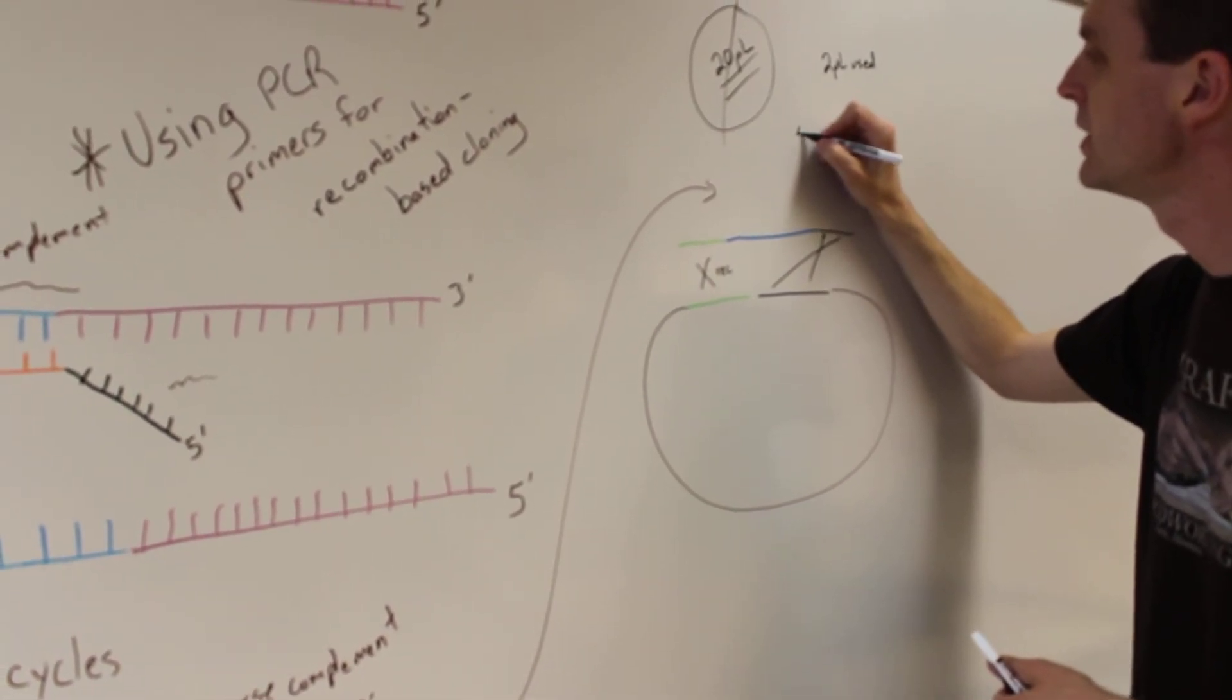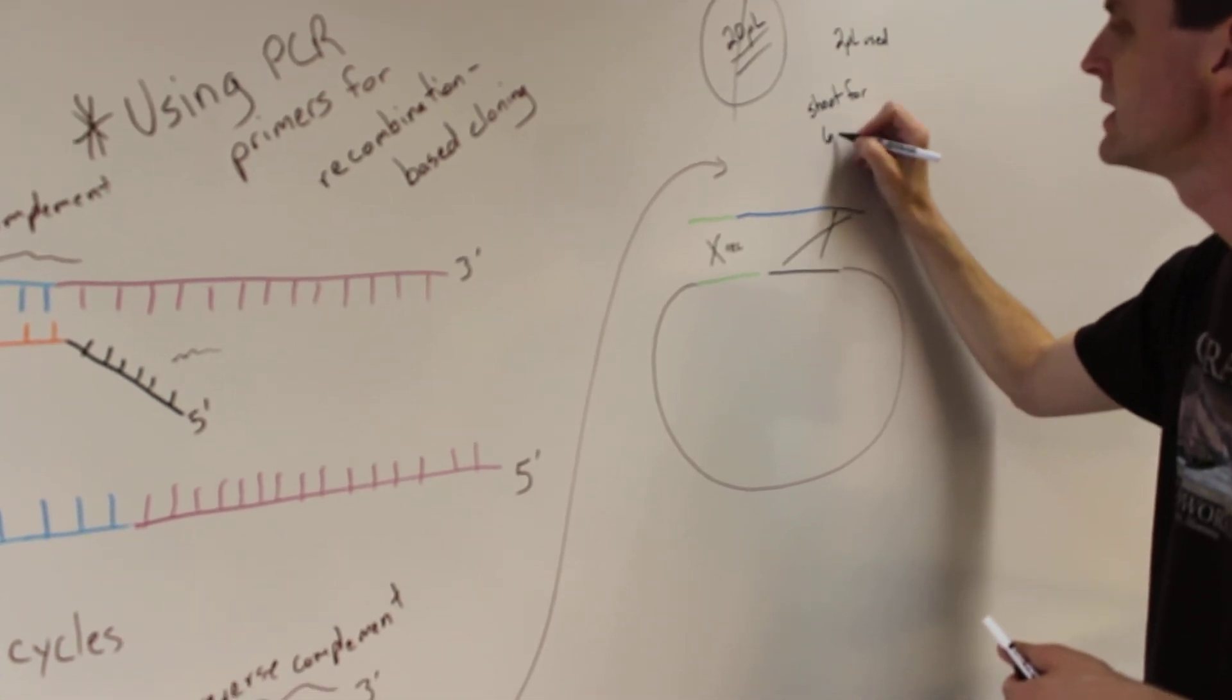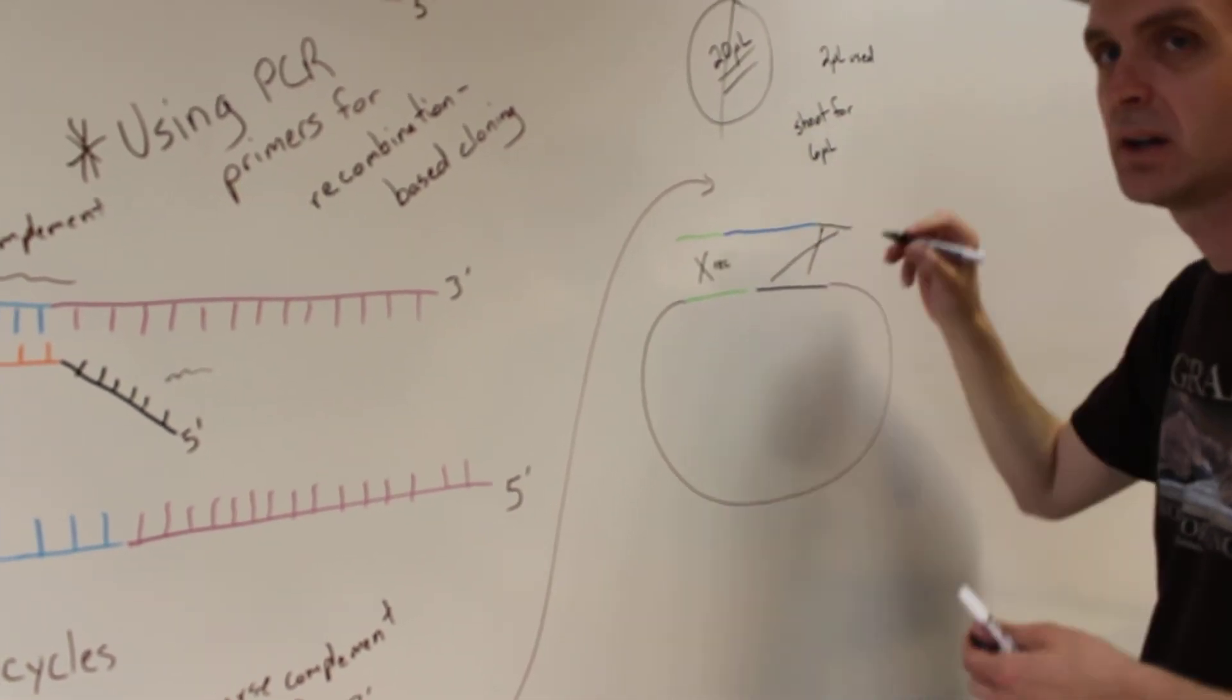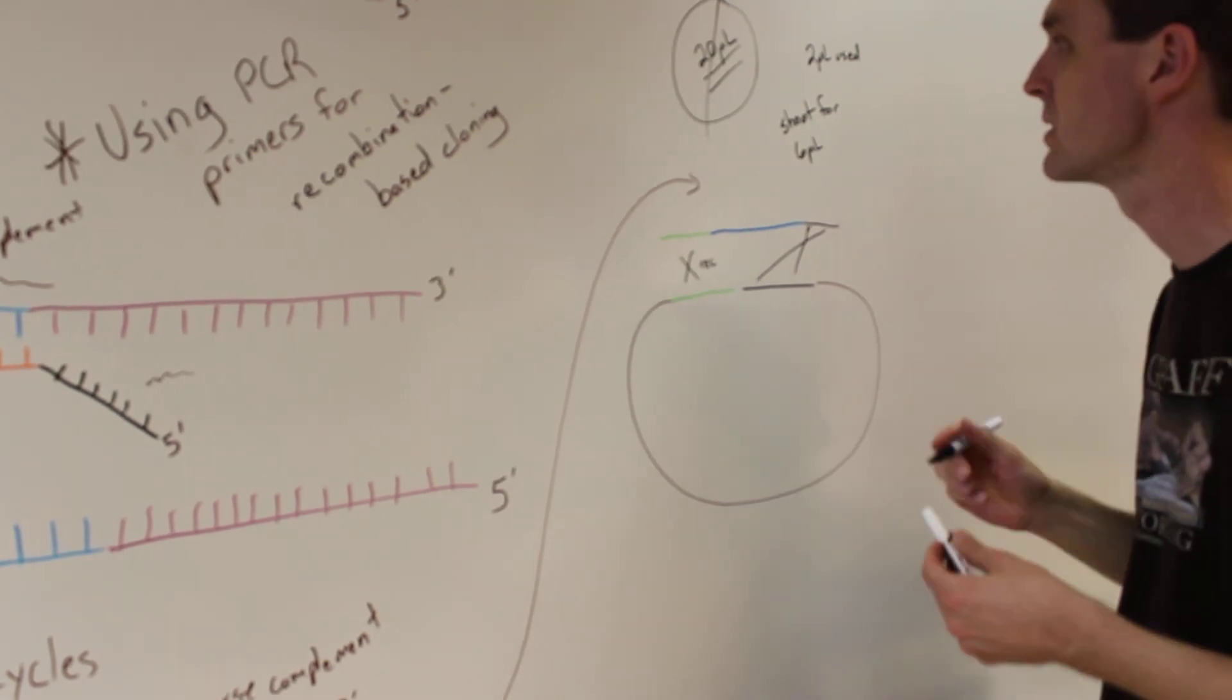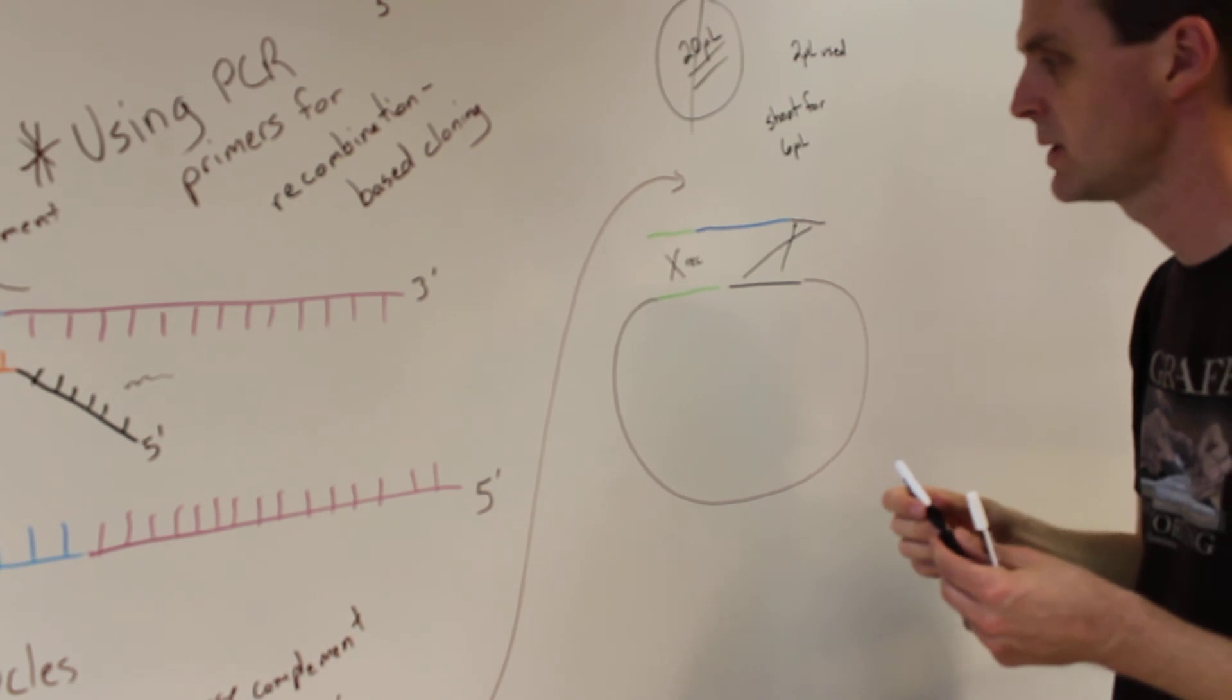So shoot for a 6 microliter reaction, and if you need help on that, of course come and talk to me. But please do not set up 20 microliter reactions, it's way too expensive.